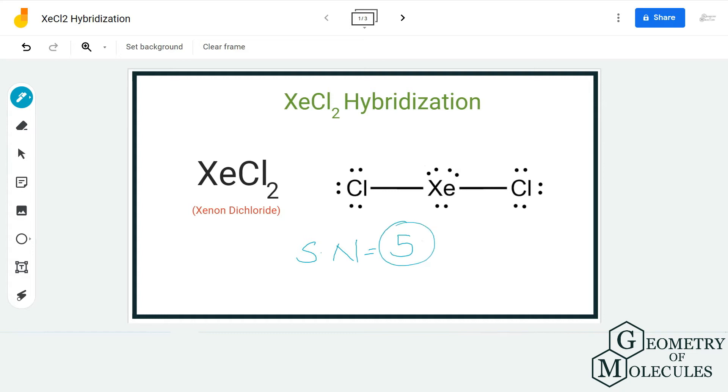because here we are considering the central atom as xenon. It has two bonding pairs of electrons, as you can see, and there are three non-bonding pairs of electrons. So the steric number becomes 5. Now referring to this